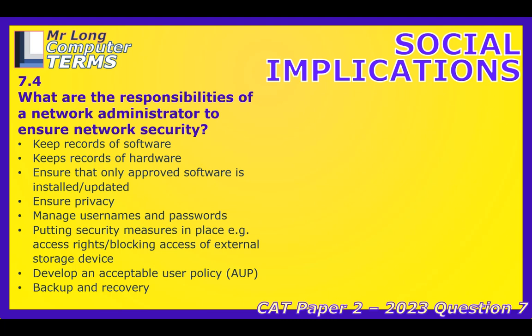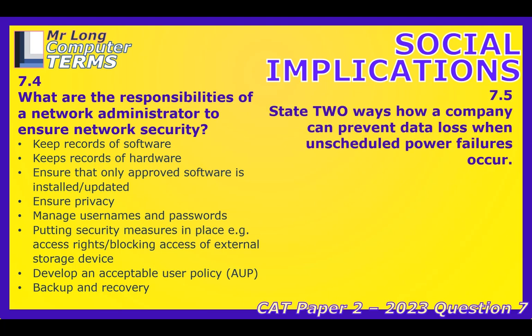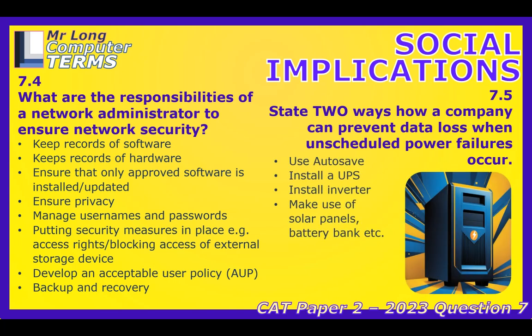Last point: power cuts. How do you stop losing all your work during unexpected blackouts? Two main things. First, autosave — most programs have it now; just make sure it's turned on. It saves your work automatically every few minutes. Second, especially for critical setups, is a UPS — an uninterruptible power supply. It's basically a battery backup. If the power cuts out, the UPS kicks in instantly and gives you maybe 10 to 15 minutes of power, enough time to save everything and shut down properly. Some places may even have inverters or solar backups for longer outages.